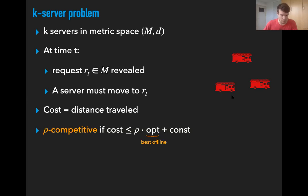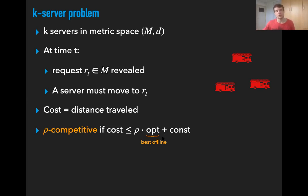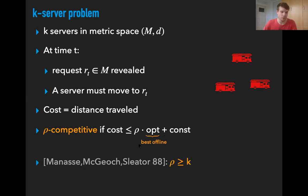As usual in online algorithms, we say that an algorithm is ρ-competitive if the cost of the algorithm on any instance is at most ρ times the optimal cost on this instance, plus perhaps some additive constant. The optimal cost here would really mean the best offline — the best in hindsight — whereas our algorithm is online, so it has to decide which server to use for the current request without knowing the future requests. That's why in general we cannot achieve ρ equal to 1. In fact, when this problem was introduced in 1988, it was already shown that the competitive ratio is at least k for deterministic algorithms on any metric space that has more than k points.